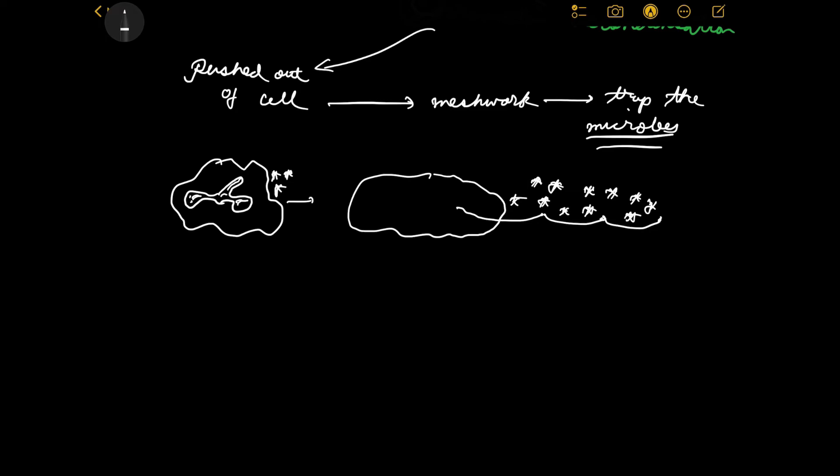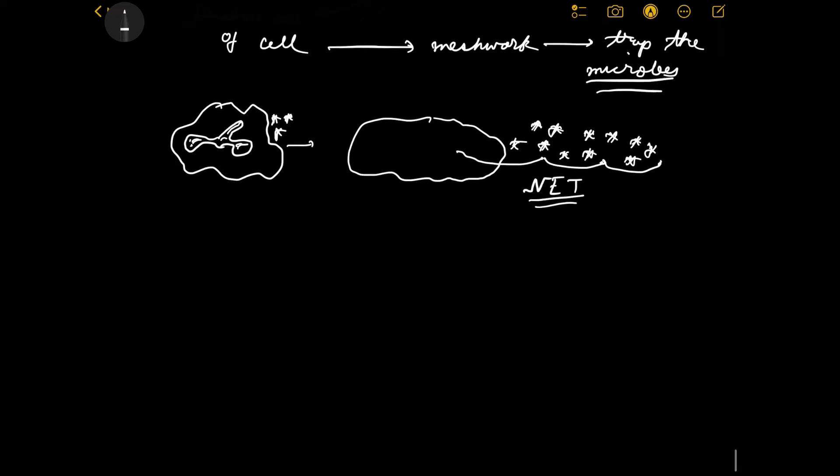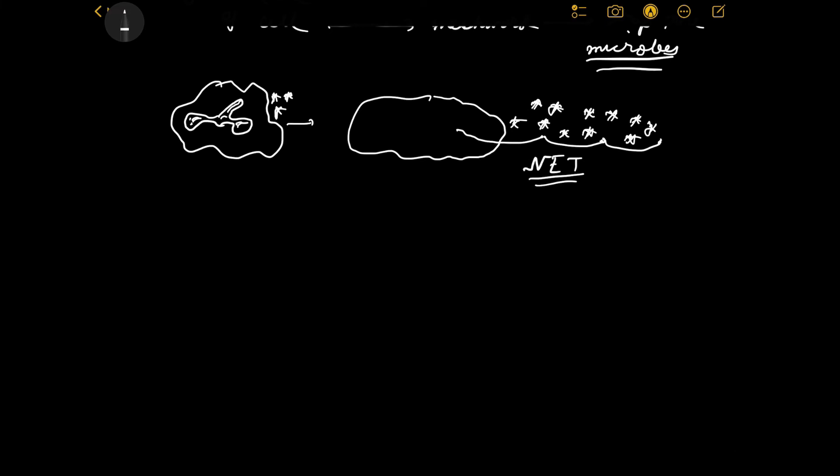This is the NET — Neutrophil Extracellular Trap. But like everything we have talked about in this chapter, this is also a double-edged sword — it also has a flip side. The beneficial effect is more defensive properties. However, the harmful side is that there is an increased chance of autoimmune disorders.